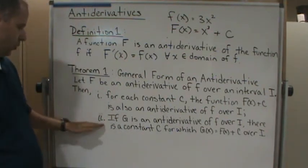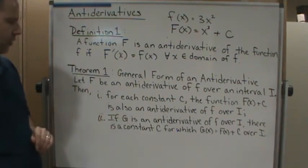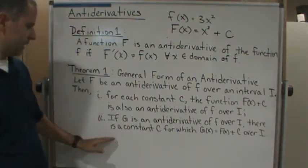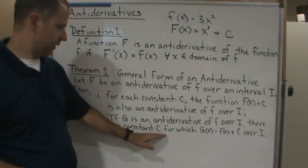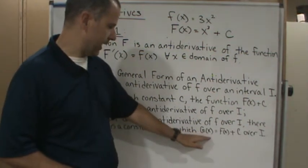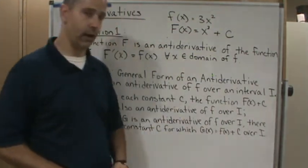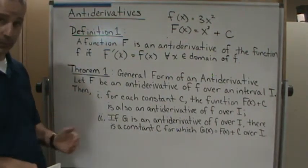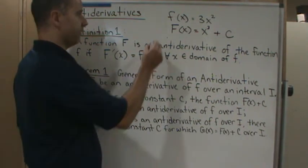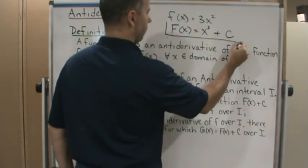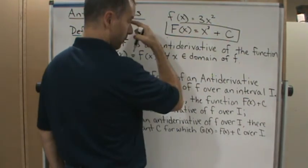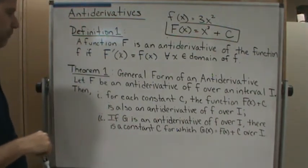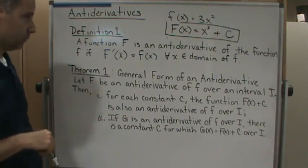Okay, two, if G is also an antiderivative of f over I, then there is a constant c for which G(x) is equal to f(x) plus c over I. In other words, what this is saying is that the most general form of an antiderivative is given by this, where it's going to be f(x) plus c.